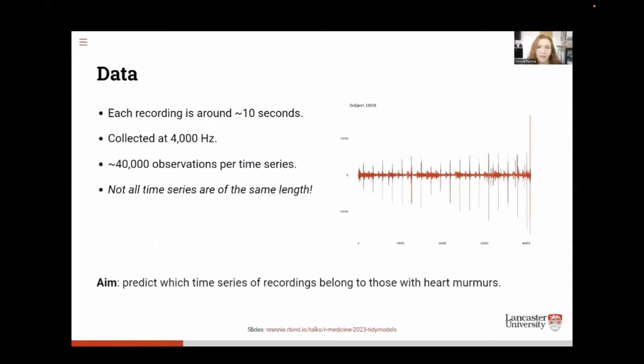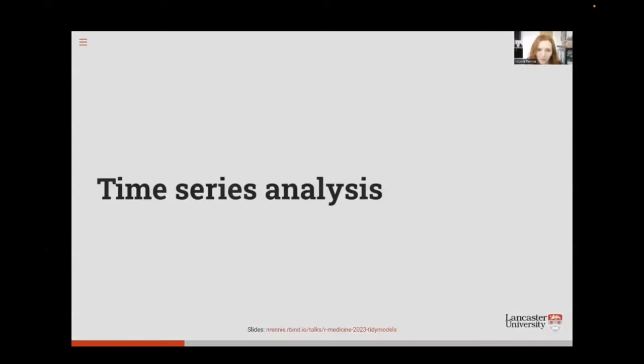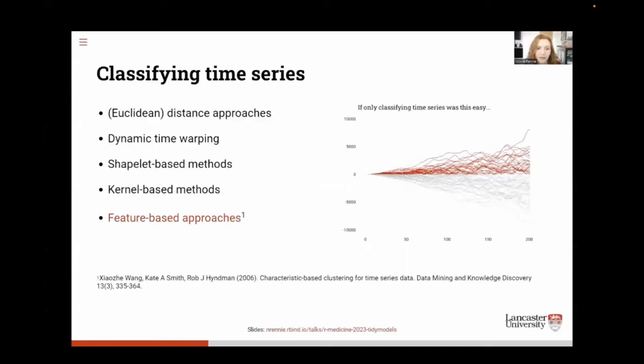The aim for this project is essentially to classify the time series into people with and people without heart murmurs. So we have some time series data and let's start doing some time series analysis. And what we want to do is cluster each of these time series into one of two groups. Do they or do they not have a heart murmur? It's essentially a binary classification problem.